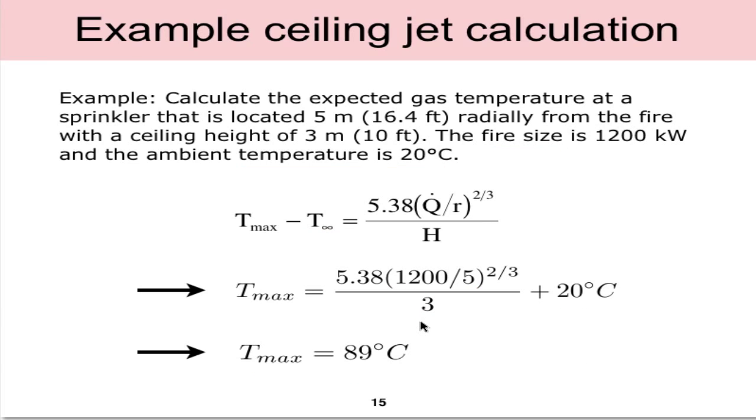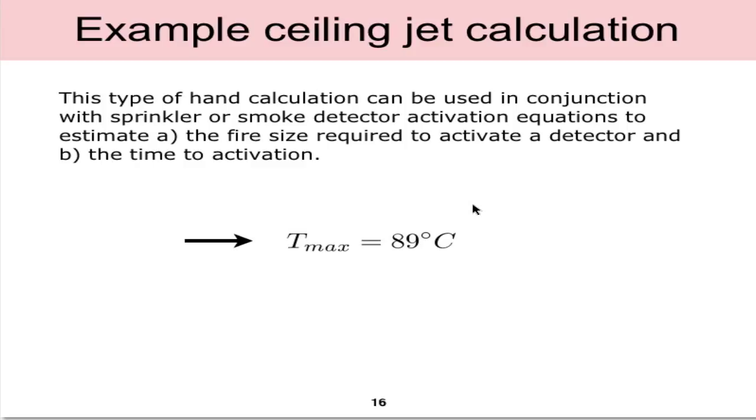This shows an example that could be used in conjunction with sprinkler or smoke detector activation equations which could estimate the required fire size and the time to activation. Now if we know a point in space and we're interested in and we know the temperature to activate a smoke detector, heat detector or sprinkler, we can actually back out the Q that's required to create to cause that temperature at that point.